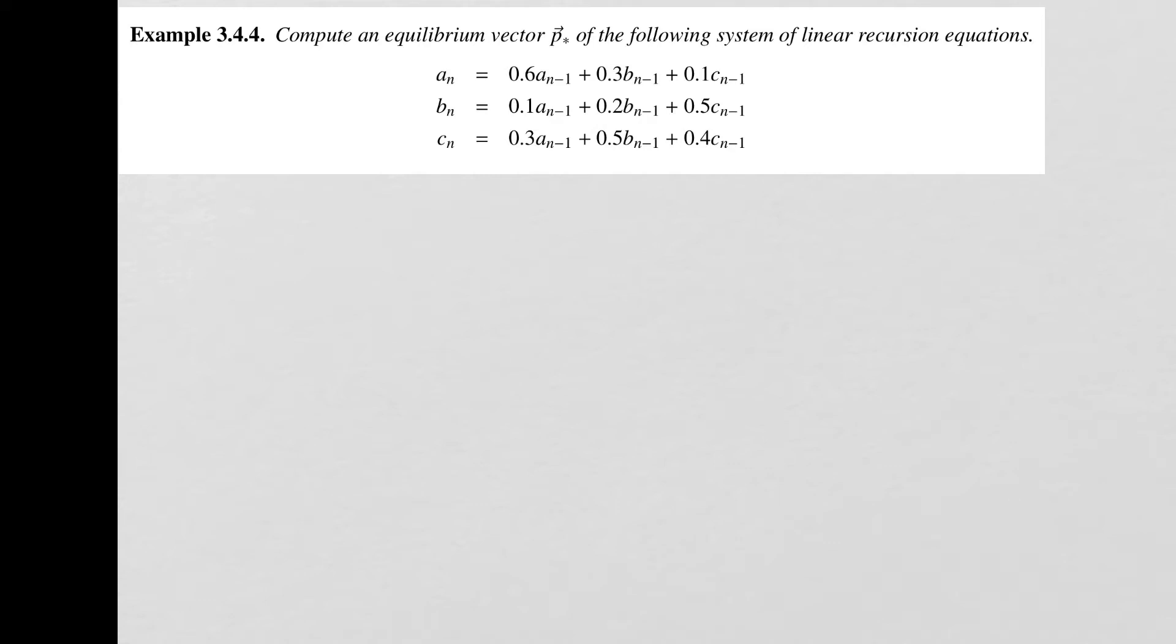We know that A is this 3x3 matrix, so we've got 0.6, 0.3, 0.1, 0.1, 0.2, 0.5, 0.3, 0.5, and 0.4. And then we've got this D vector, but it's actually just a zero vector, so we'd write that in as well.